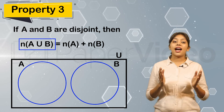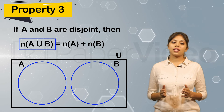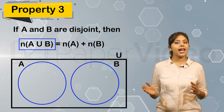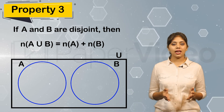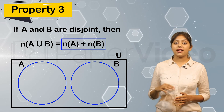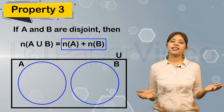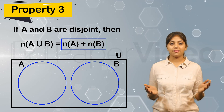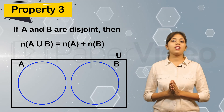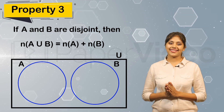Therefore, the cardinality of the union of two disjoint sets A and B is equal to the cardinality of set A plus the cardinality of set B. This is the third property of cardinality of sets.